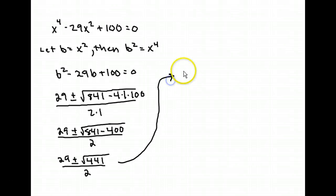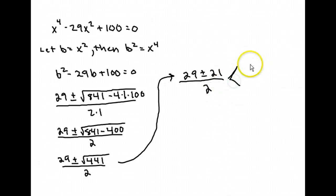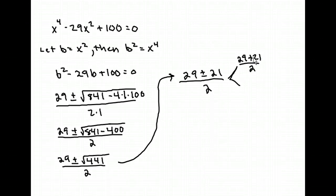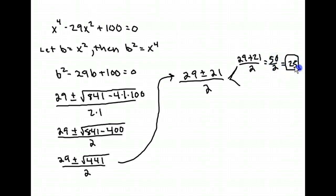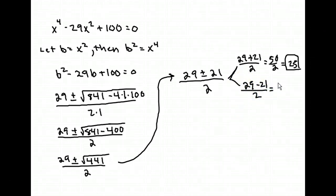So this comes out to 29 plus or minus 21 over 2. Your two answers will be: 29 plus 21 over 2 — when you add those together you get 50, so that's 50 divided by 2, which is 25. So 25 is one of your answers. And 29 minus 21 over 2, which comes out to 8 over 2, which is 4 as the other answer.